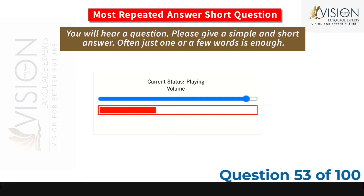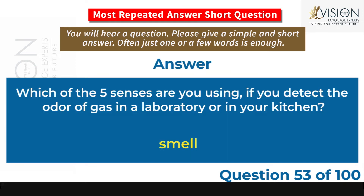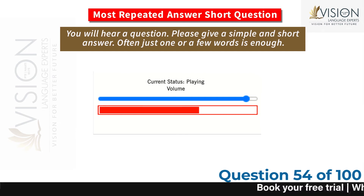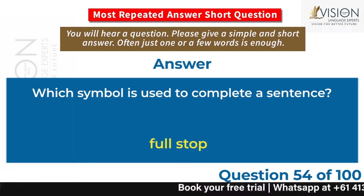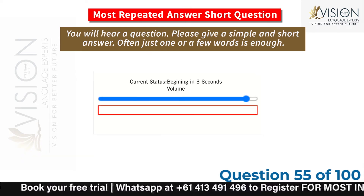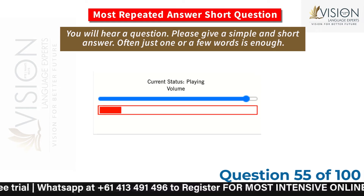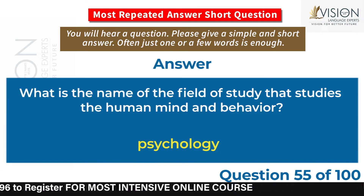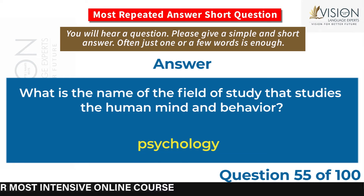Which of the five senses are you using if you detect the odor of gas in a laboratory or in your kitchen? Smell. Which symbol is used to complete a sentence? Full stop. What is the name of the field of study that studies the human mind and behavior? Psychology.